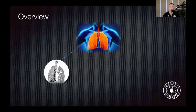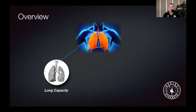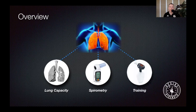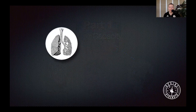Today we'll start by looking at lung capacity — what it is, why it's important for performance, and how we can measure it in our athletes. We're going to talk about spirometry, how to conduct a spirometry test, how to read the results, and find potential respiratory limitations in our athletes. And finally, we're going to talk about the training aspect: how to increase your lung capacity, what different respiratory devices are available on the market, and what the different training protocols might look like in order to reestablish lung capacity.